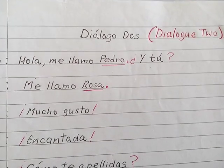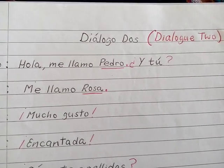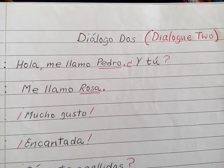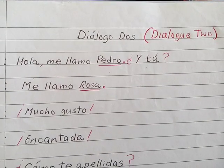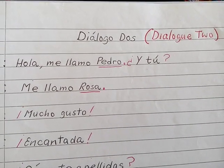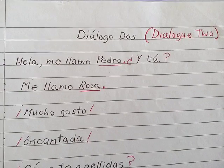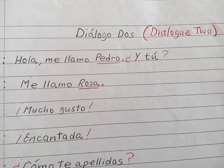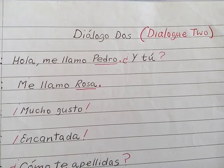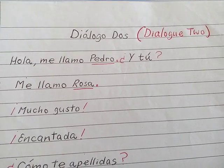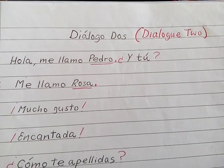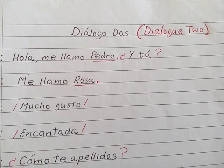Lección tres. This is a dialogue between Pedro and Rosa. The aim of this lesson is to practice how to ask someone's surname. Listen carefully.